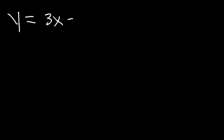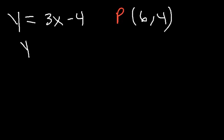Go ahead and try this example. Let's say that y is equal to 3x minus 4, and you want to write the equation of the line that's parallel to this line and passes through the point 6 comma 4. Feel free to pause the video, work through this example, and then unpause it to see if you have the right answer. So let's begin, starting with y is equal to mx plus b. Let's replace m with the slope and solve for b.